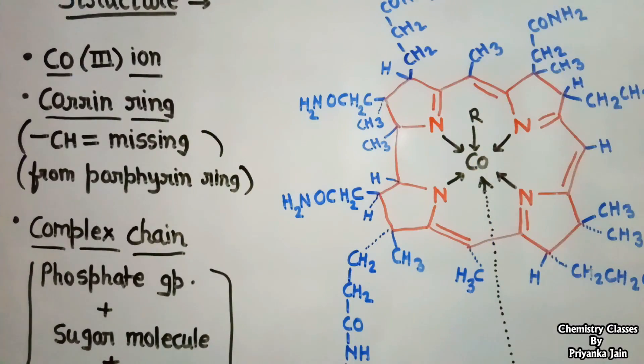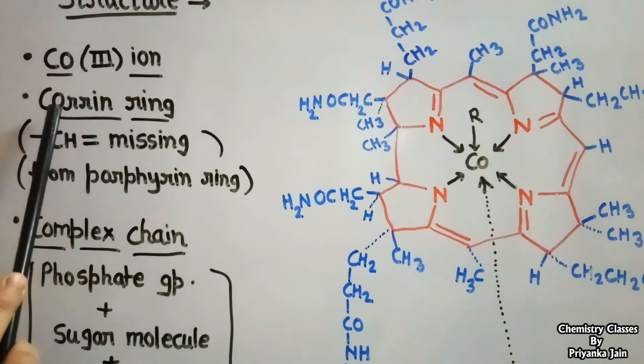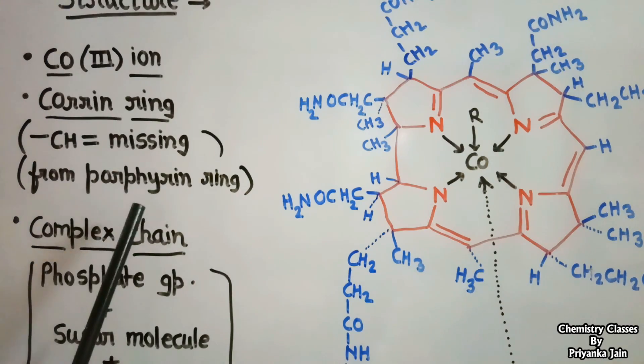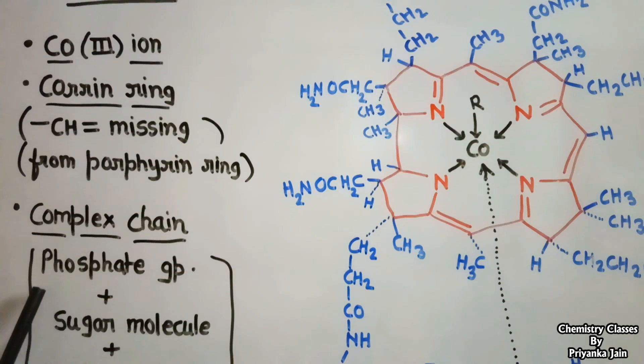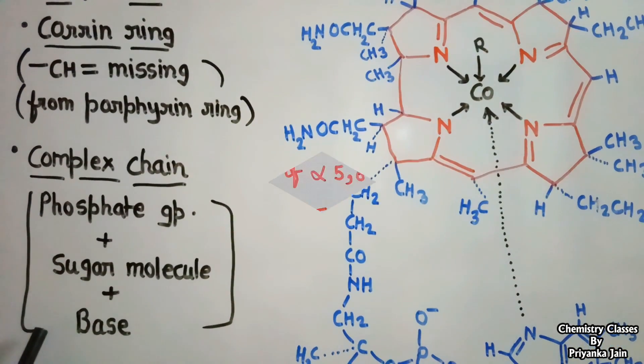Now we see the components of vitamin B12 in short. There is a central cobalt 3+ ion present in the center, a corin ring surrounding this cobalt ion that has a CH group missing from the porphyrin ring, and a complex chain that consists of a phosphate group, a sugar molecule, and a base.